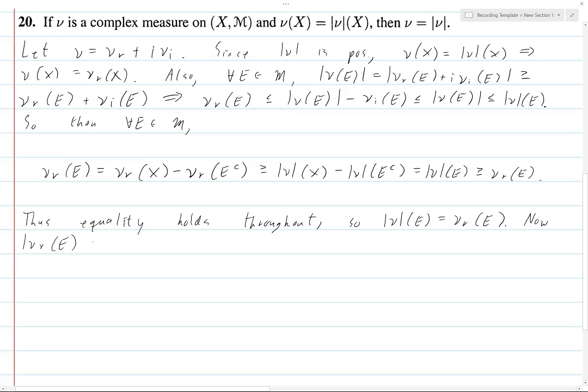And I guess this is kind of a trick. If we look at this thing squared, then when we factor it out, we get ν_r of e, this thing squared, plus ν_i of e squared. And this is obviously greater than or equal to ν_r of e squared.